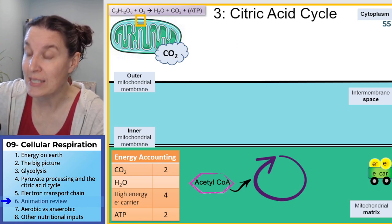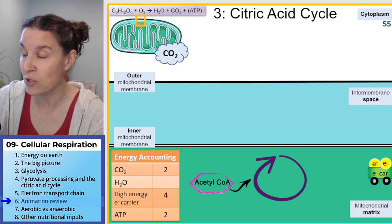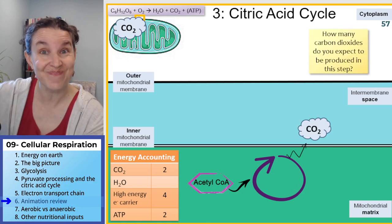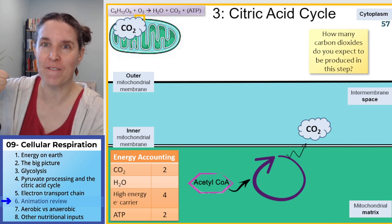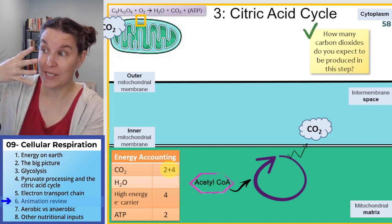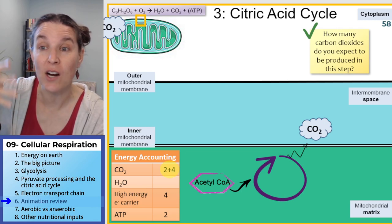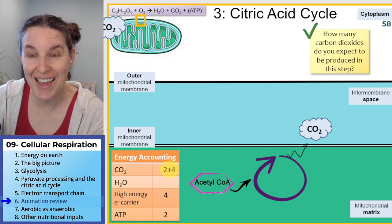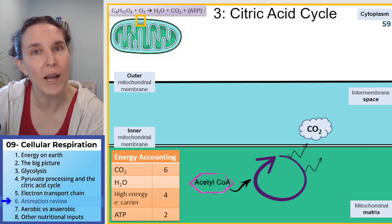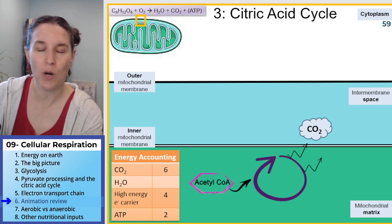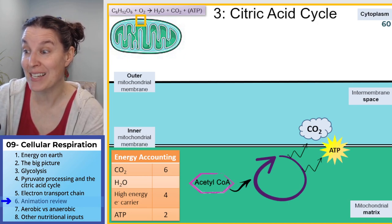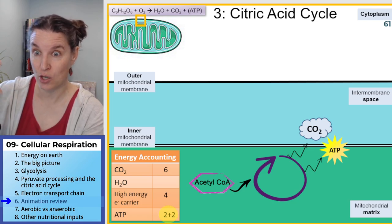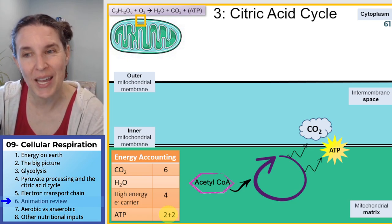Acetyl-CoA — remember, we have two of those — enters the citric acid cycle, goes through the whole process, and we're summarizing what comes out. Carbon dioxides: how many? The four remaining carbons are going to get bumped out in the citric acid cycle. Keep track of that in our energy accounting — we have a total of six carbon dioxides. We also get two ATPs, which we add to our energy accounting.